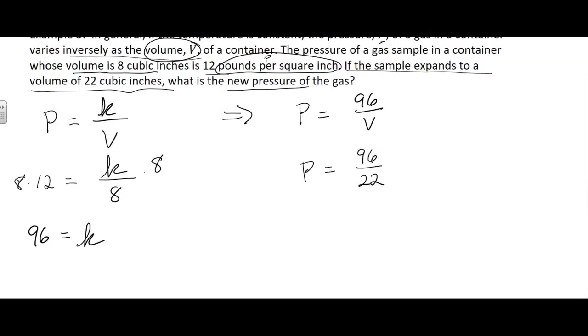A lot of times these answers will come out to be decimal. And I get 4.36. So I'm going to say the pressure is about 4.36. You could put PPI or pounds. I'll just write out pounds per square inch.